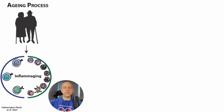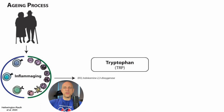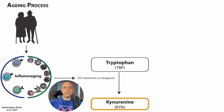During aging, there is an increase in inflammation, which together are known as Inflammaging. The importance of Inflammaging is that it induces expression of the enzyme IDO, otherwise known as Indolamine 2,3-Dioxygenase. IDO catalyzes the degradation of the amino acid tryptophan into kynurenine.